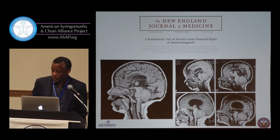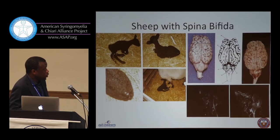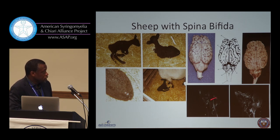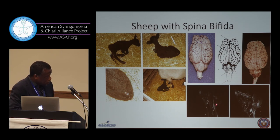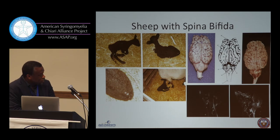You can study this in sheep embryos — I have a model looking at sheep with spina bifida. We can see sheep can have herniated tonsils on MRI. And we can play with the same thing: if you repair sheep in utero, you get less tonsil herniation, but they still show some difference in the pattern of the back part of the skull.